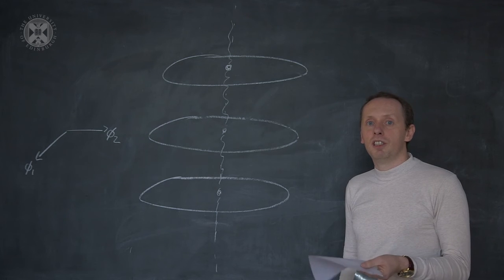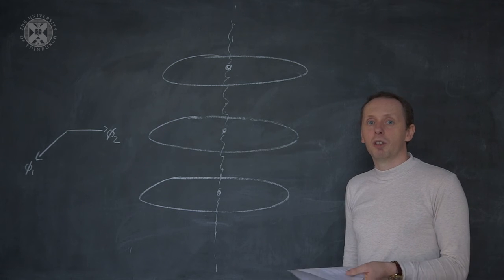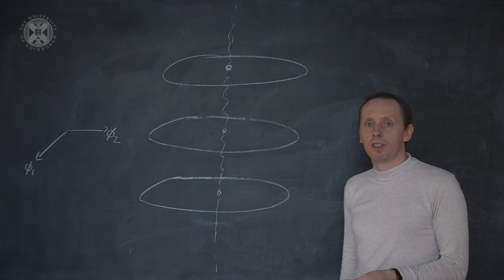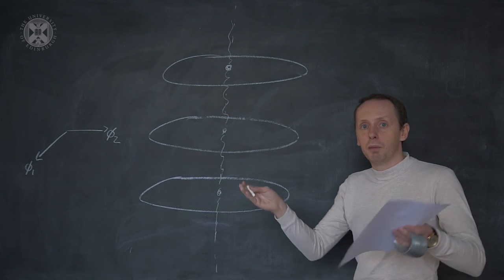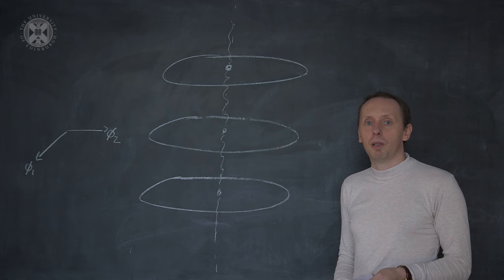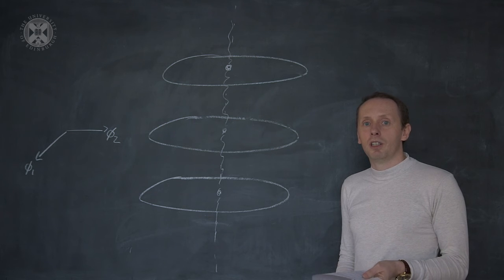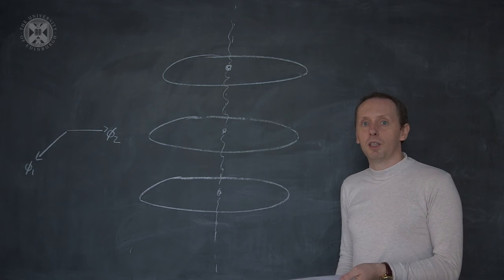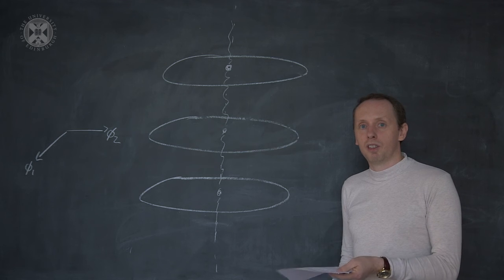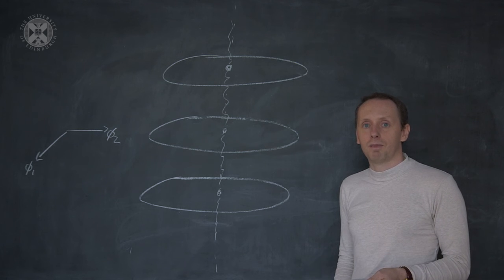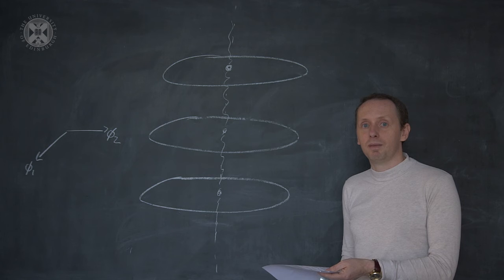We've seen that a zero or constant potential corresponds to massless particles, and that a quadratic or bowl-shaped potential corresponds to massive particles. The question now is, does the Mexican hat potential correspond to massive or massless particles? And the answer, as we'll see, is both.